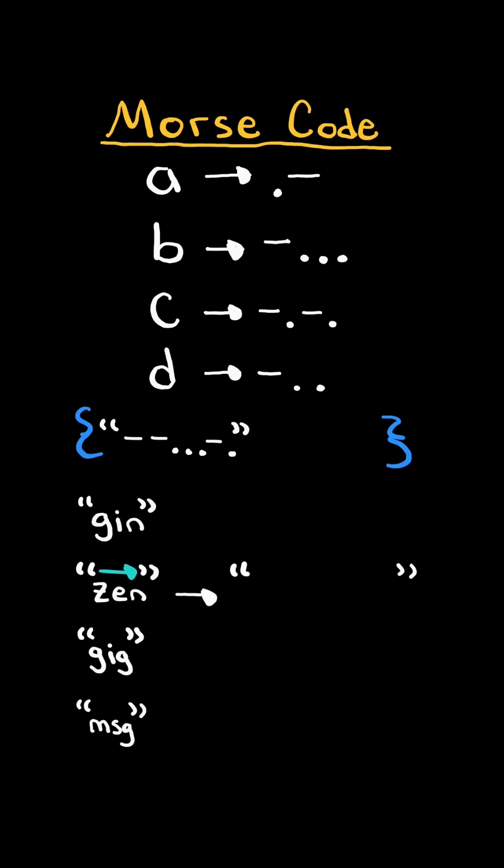We would iterate through the characters in the word and look up its Morse code and add the Morse codes to the string. Now at the end when we go to add it to the set we notice it already exists so we don't add a duplicate and continue the process with the next word.